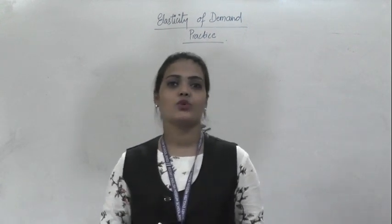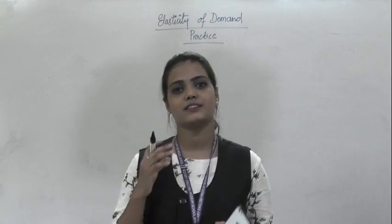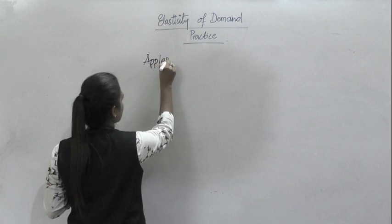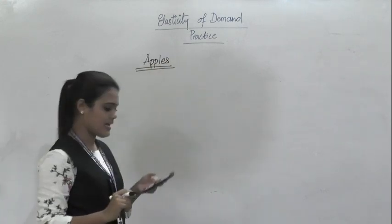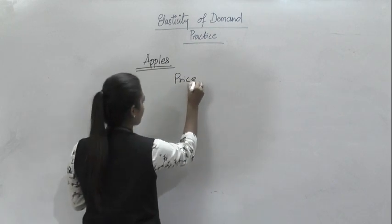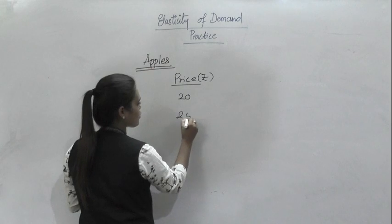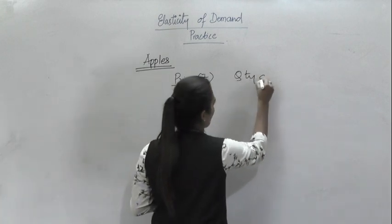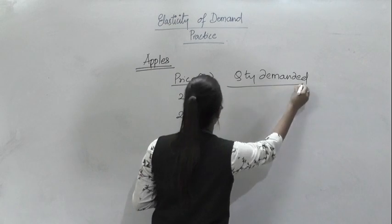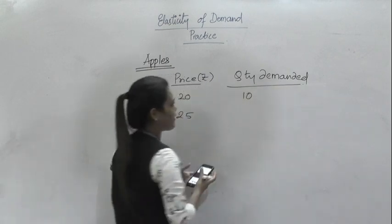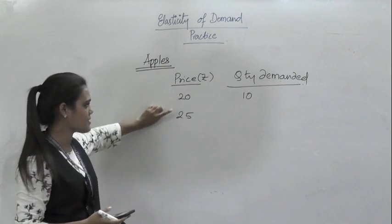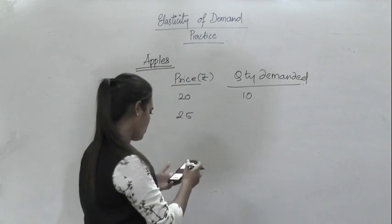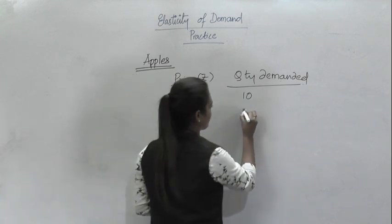Hello guys, as you know I have given you some questions for practice, so let's get started. The first question was about the prices and quantity demanded of apples. It says that the price of apples increases from rupees 20 to rupees 25. The corresponding quantity demanded was earlier 10, and as the law of demand applies, if the price increases the quantity demanded decreases, so demand falls to 5.